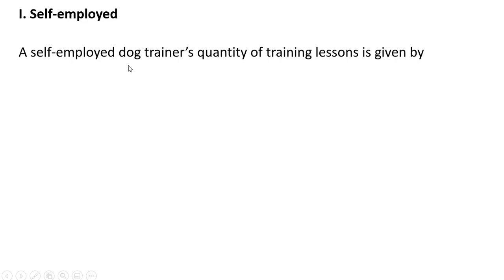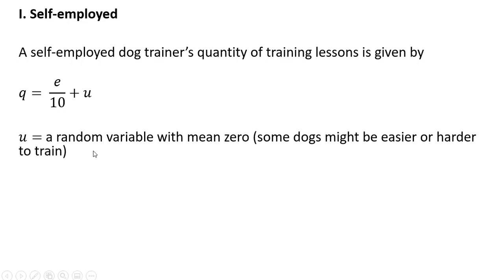Starting with self-employed, a self-employed dog trainer's quantity of training lessons is given by the following. So Q, quantity of lessons, equals E divided by 10 plus U. U is a random variable with mean zero. Some dogs might be easier to train, some much harder.